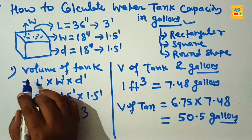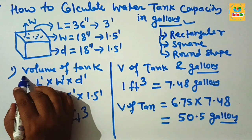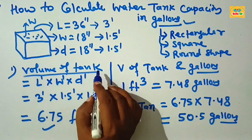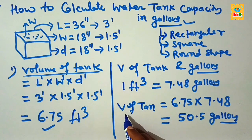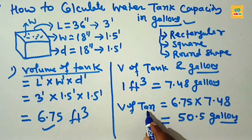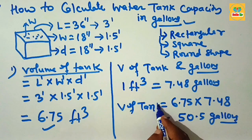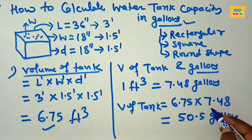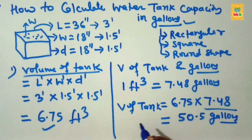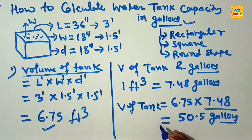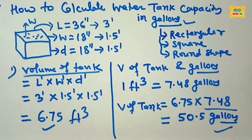This is the method to calculate the water tank capacity in gallons: first find the volume of the water tank, then multiply the volume in cubic feet by 7.48, and this will give you the gallons of water. Thank you.